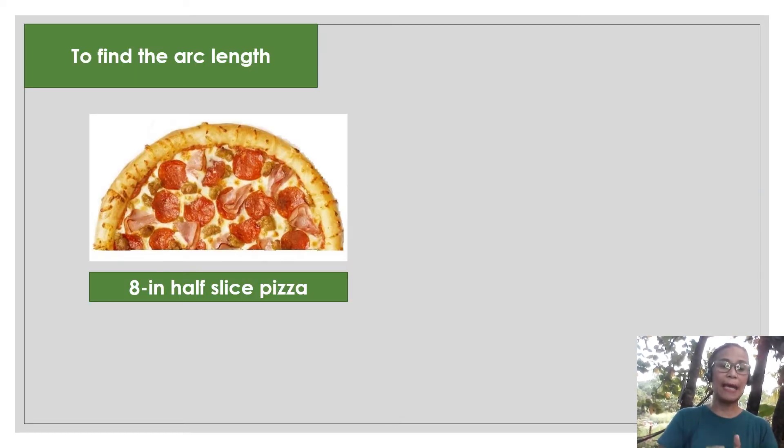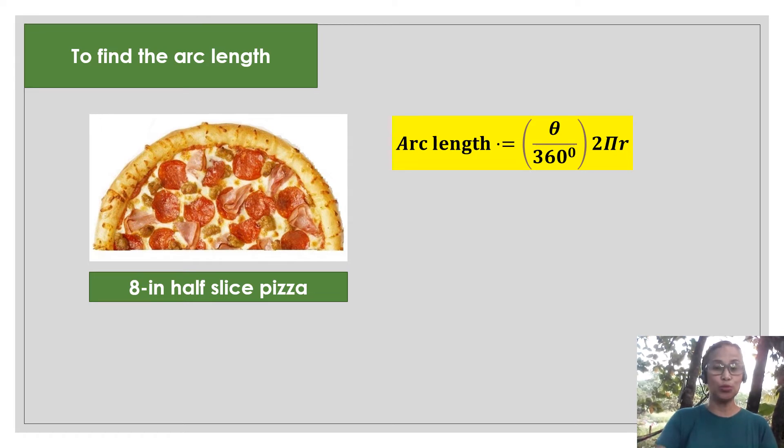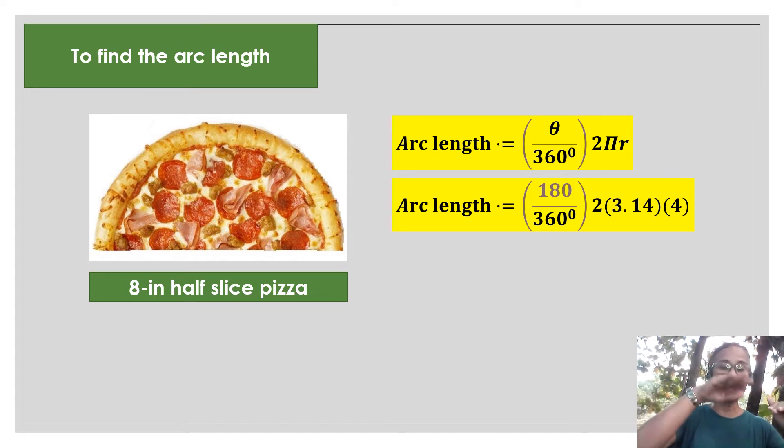So given is 8 inches half slice pizza. So that's our diameter there, 8. But in this example, I'm going to use the formula 2 pi r. So I have your arc length is equal to theta over 360 multiplied to 2 pi r. So by substitution, since it's a half slice and it's a semicircle, therefore the central angle here is 180 degrees. Because it forms into a straight angle. Multiplied by 2 multiplied by the value of pi multiplied to 4. Now where did I get 4? Since the diameter is 8 inches, therefore, half of that is the radius. So our radius is 4.